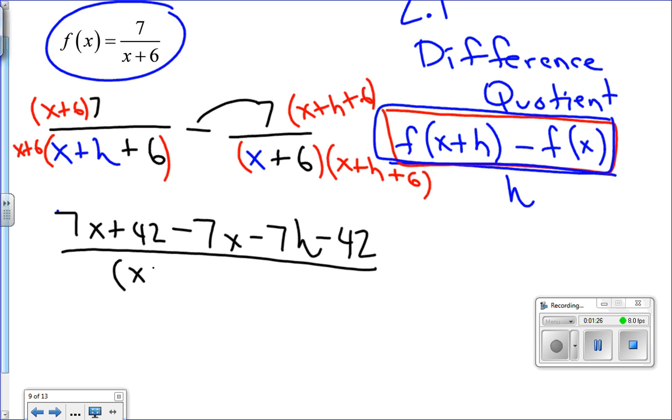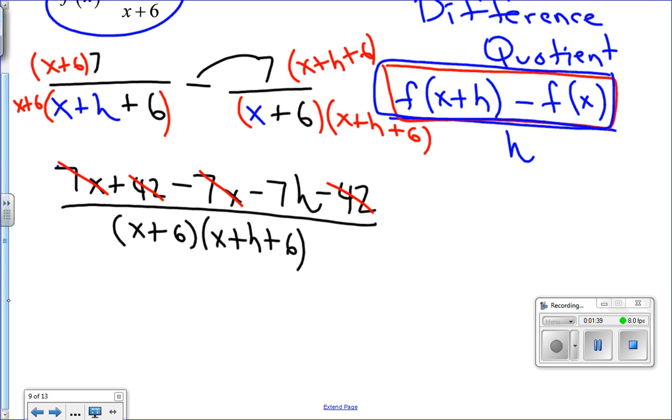Now the nice thing here is that several things will cancel. I can take out the 7x's, I can take out the 42's. So then, not my difference quotient but the top of my difference quotient, will be negative 7h all over the denominator.